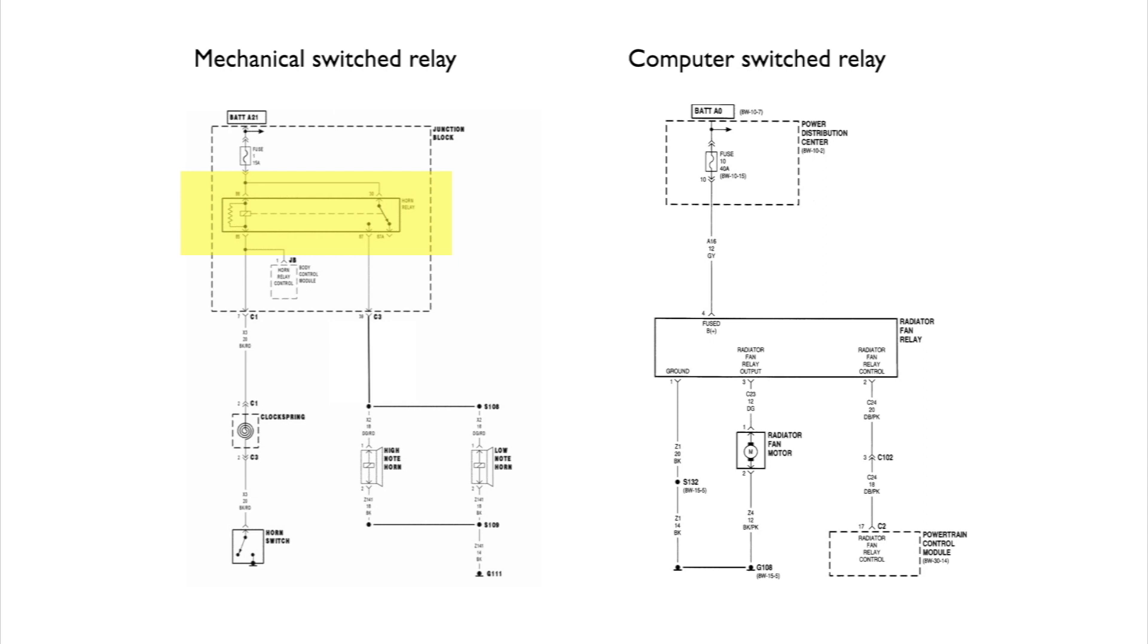On the mechanically switched relay you can see that the engineers show us an actual mechanical diagram inside that relay because there are moving parts in there. On the computer switch relay the engineers don't show us anything inside the relay because there are no moving parts in there. That's why it is called a computer switch relay.